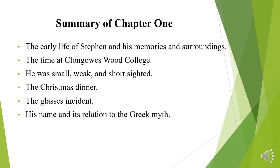Chapter one has several important points to highlight: the early life of Stephen and his memories and surroundings; his time at Clongowes Wood College; how he is small, weak, and short-sighted, which affected his interaction with friends and caused him to be bullied. We also have the Christmas dinner, one of the most important parts of this chapter; the glasses incident; and finally, his name and its relation to Greek myth.